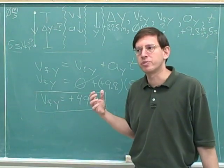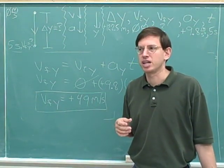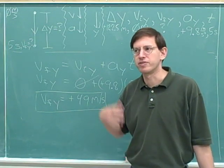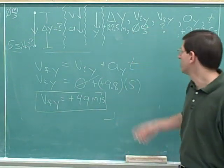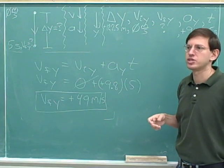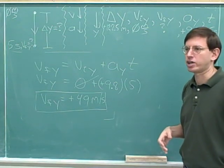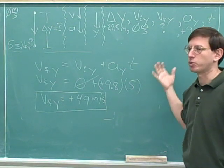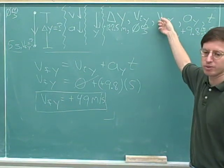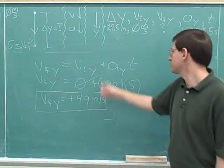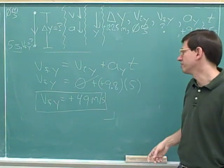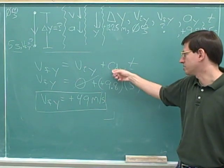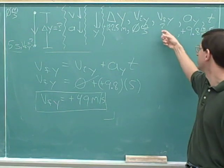Remember that if you know three numbers, you can pick a kinematics equation to figure out either of the other two numbers. And once you know four of the kinematics numbers, you can use any of the equations to figure out the final variable — any of the equations except, of course, the one that's totally missing that variable. So remember, you didn't have to use this equation to solve this problem; there are three other equations you could have used to figure out the final velocity.